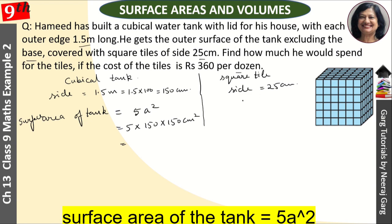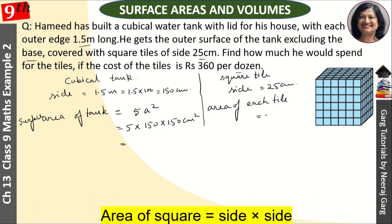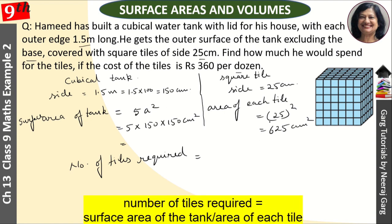Now we calculate the area of each tile. Area of each tile equals 25 squared, which is 625 cm². Now, the number of tiles required to cover the tank is total tank area divided by area of 1 tile, so that is 5 × 150 × 150 divided by 625.